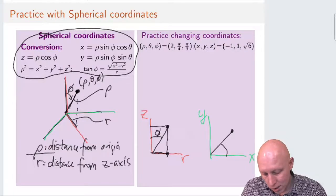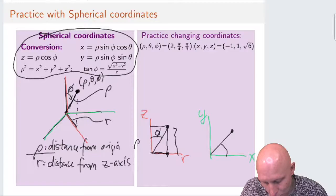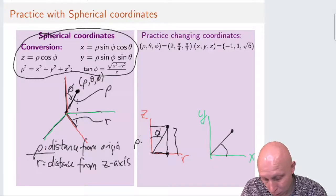And that tells us what the z-direction is. That gets us that this is rho times cosine of phi.